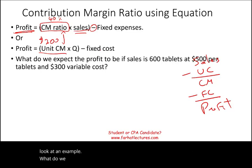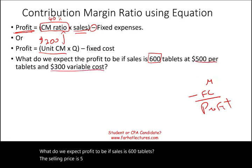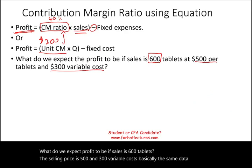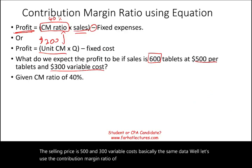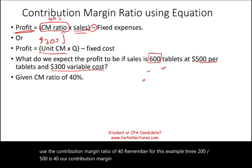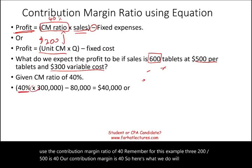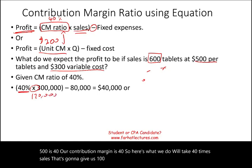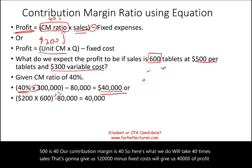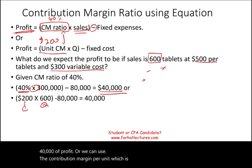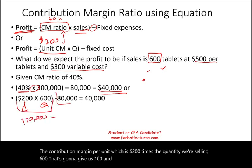What do we expect profit to be if sales is 600 tablets, the selling price is $500, and variable cost is $300? Using the contribution margin ratio of 40% — since $200 divided by $500 equals 40% — we take 40% times sales of $300,000, giving us $120,000 contribution margin, minus fixed cost of $80,000, giving us $40,000 of profit. Or we can use the unit contribution margin of $200 times 600 units, which equals $120,000, minus fixed cost of $80,000, giving us $40,000 profit.